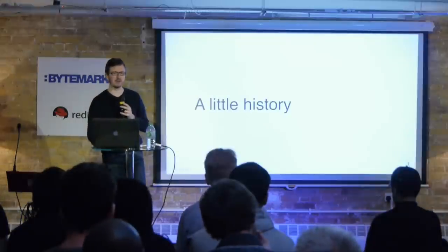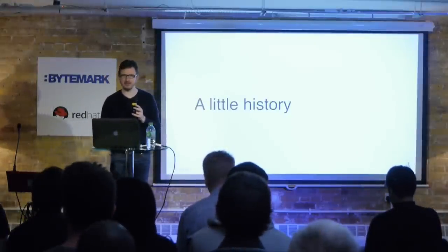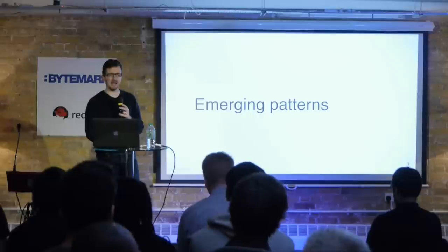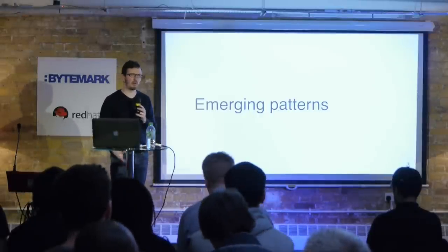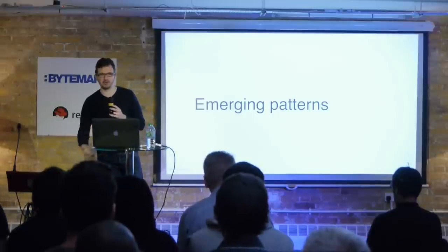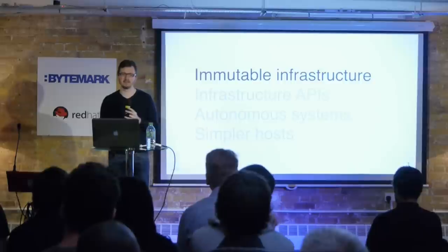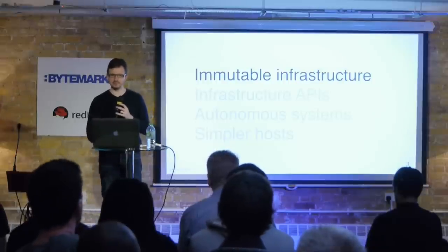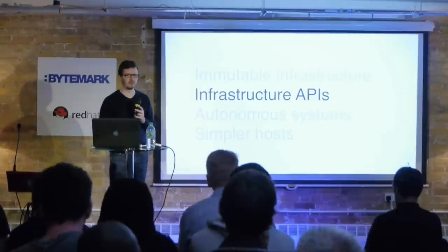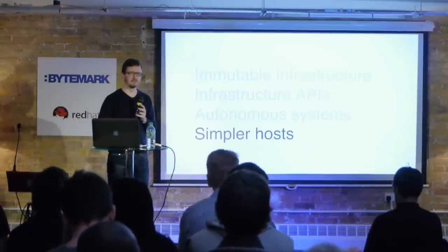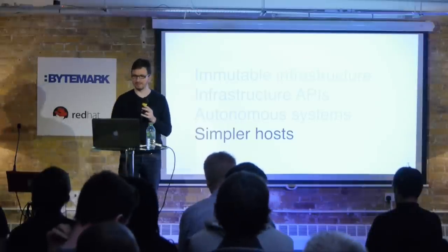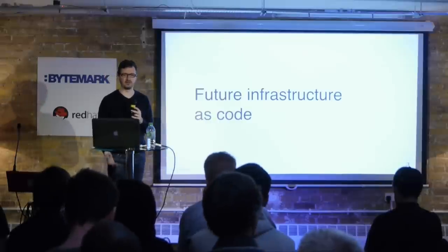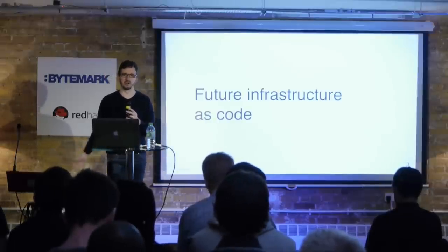In this talk, I'm going to cover a little bit of history to the discipline. I'm mainly going to talk about emerging patterns — pretty quickly, since nearly each could be a separate talk on its own — around immutable infrastructure, the growing number of APIs for controlling infrastructure, autonomous systems, and simple hosts. I'll also touch on something that the next talk will go into in detail, and end with infrastructure as code for all of these new paradigms.